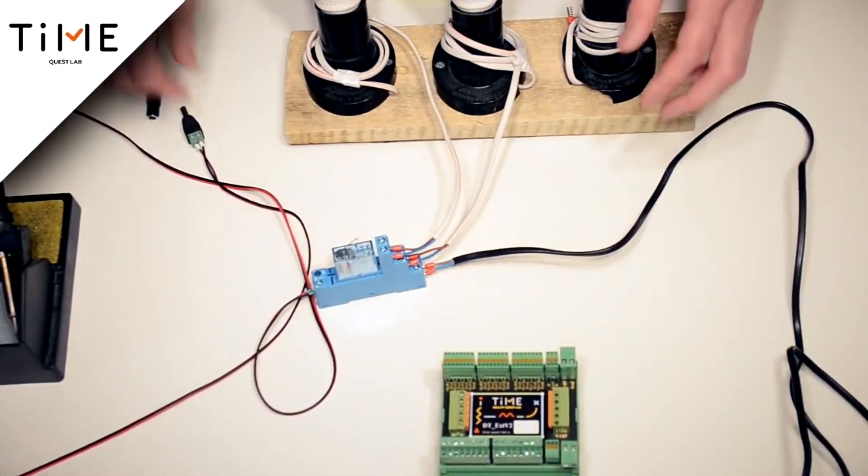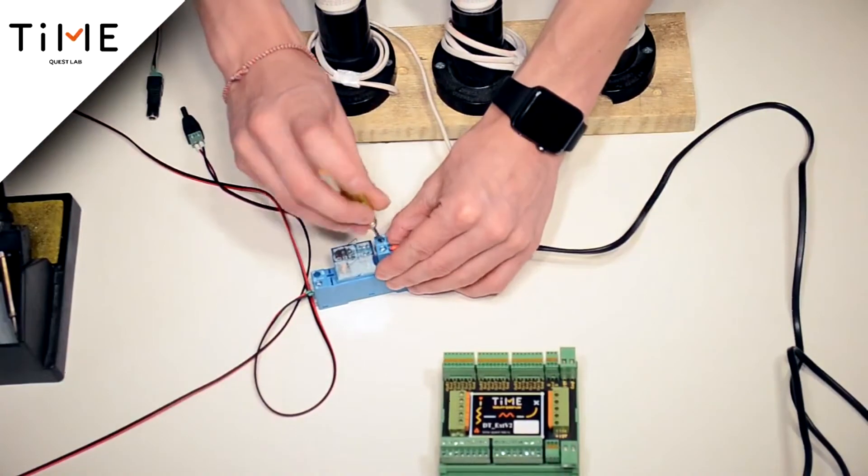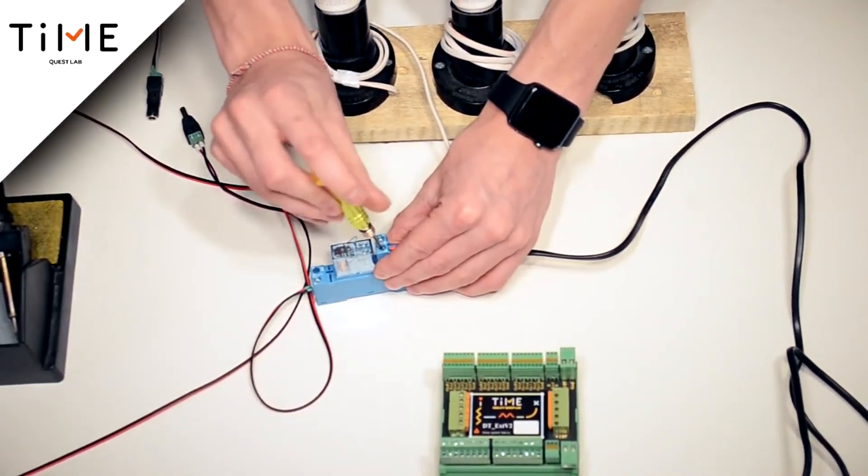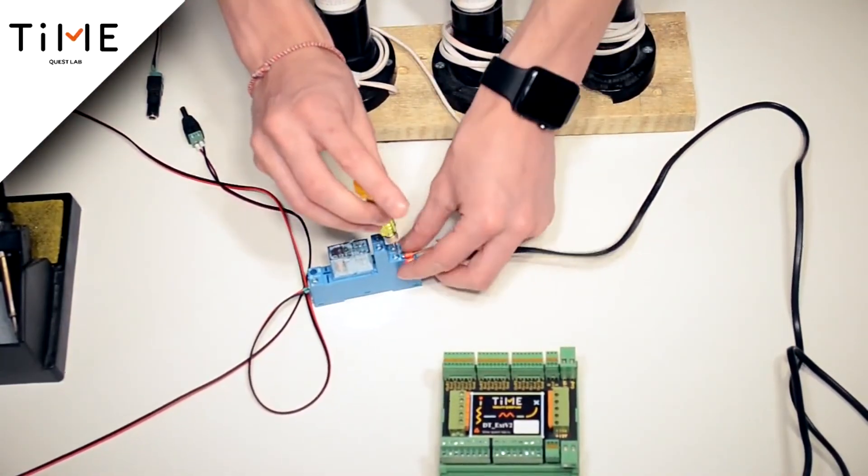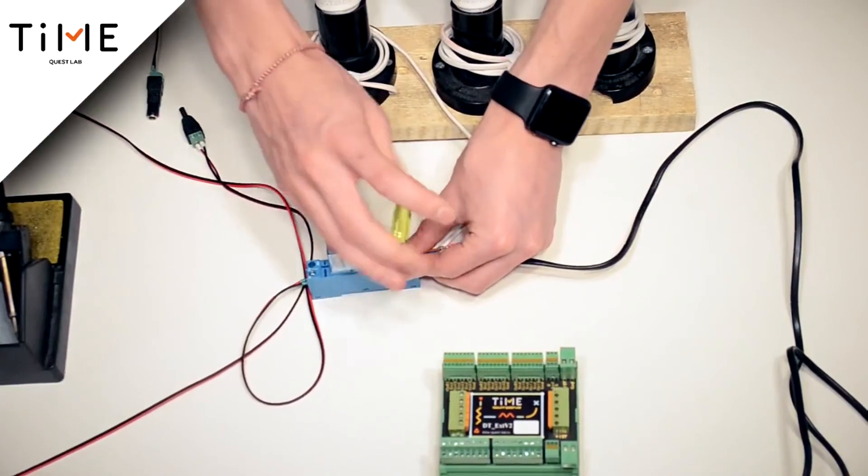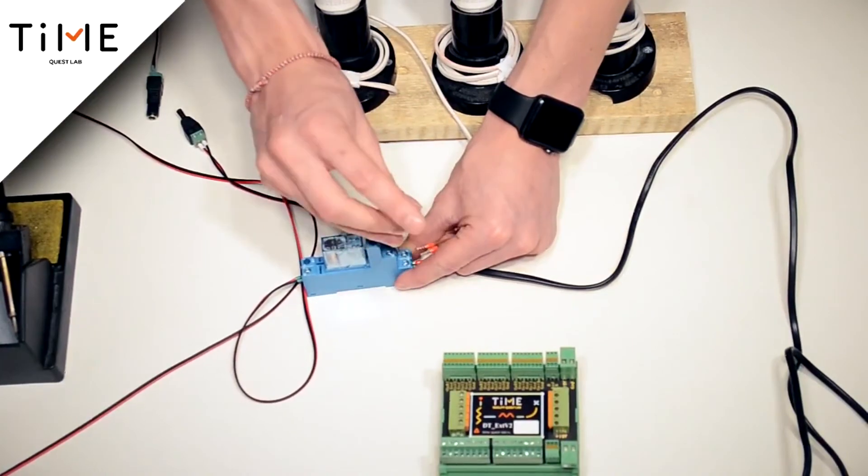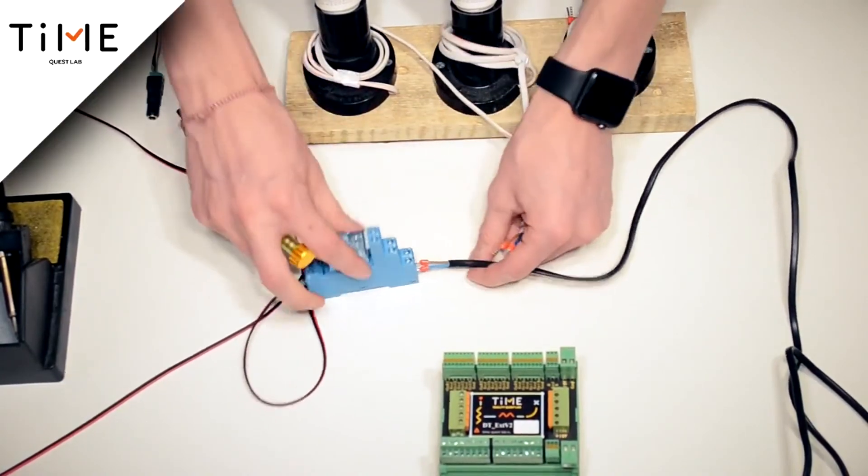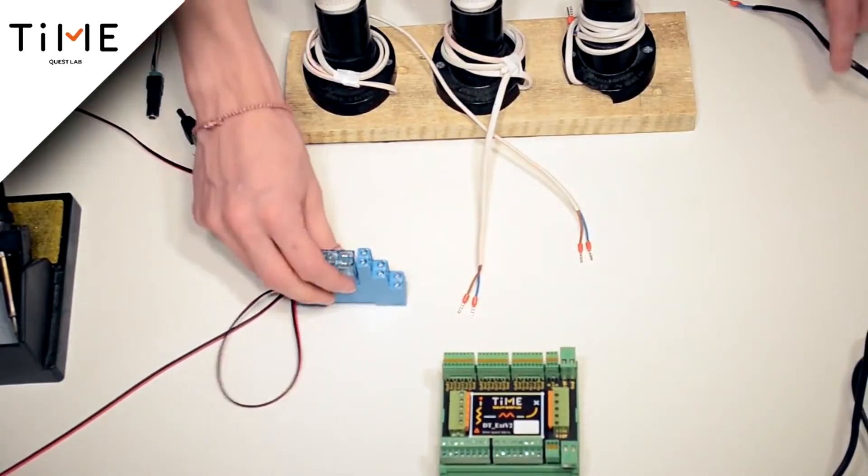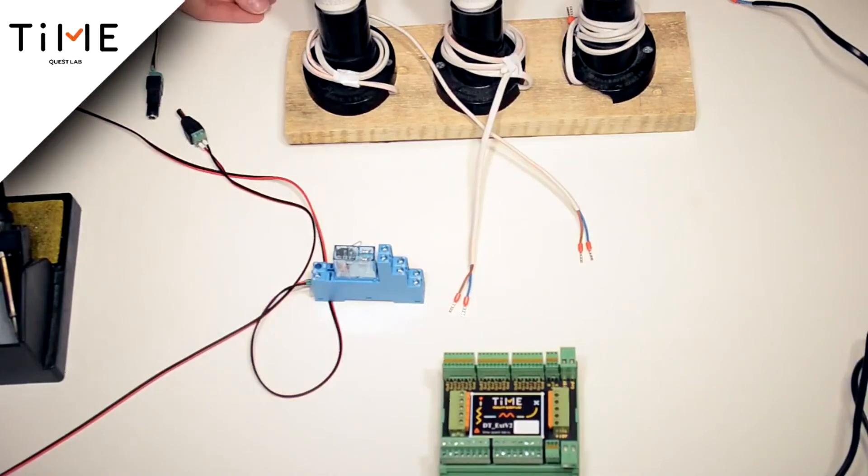The next thing I want to tell you about the relay. The power supply doesn't have to necessarily be 220V, and the devices controlled by the relay don't have to be 220V either. You can connect any power to the common block. The main thing is that this power supply corresponds to the normal power supply for the device.